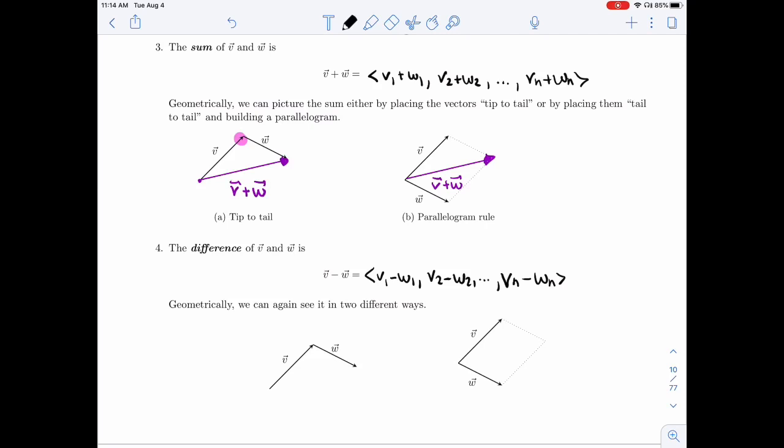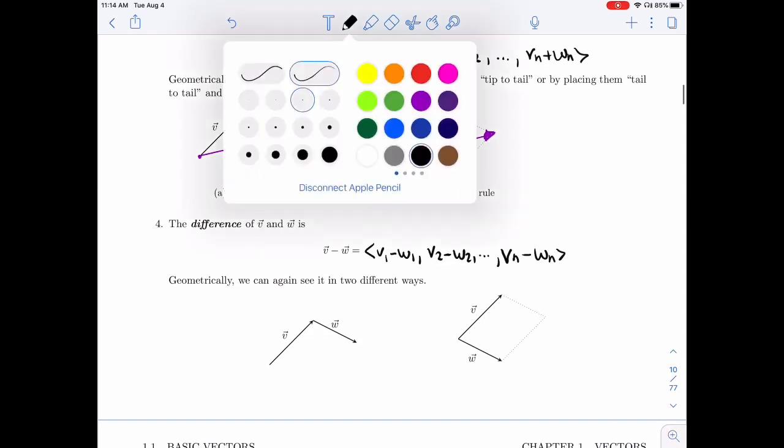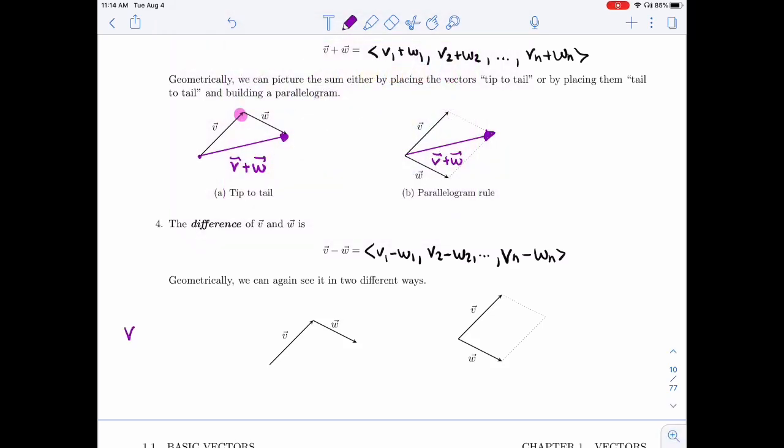Geometrically, let's look at what this means. When I write V minus W, you can think of V plus minus W. So in this picture, if I start by first flipping W...